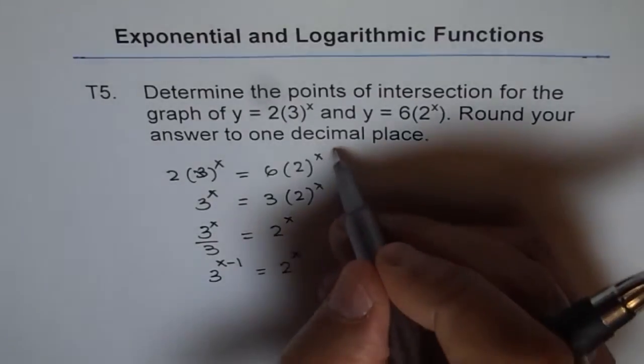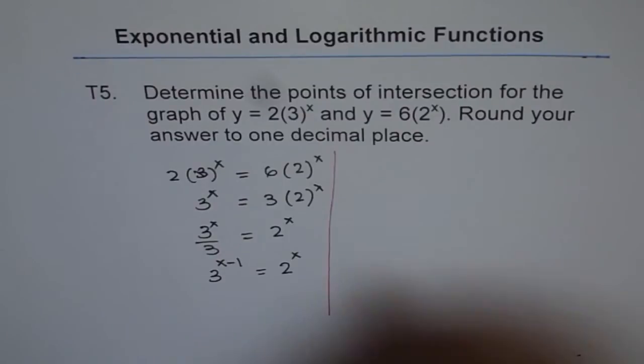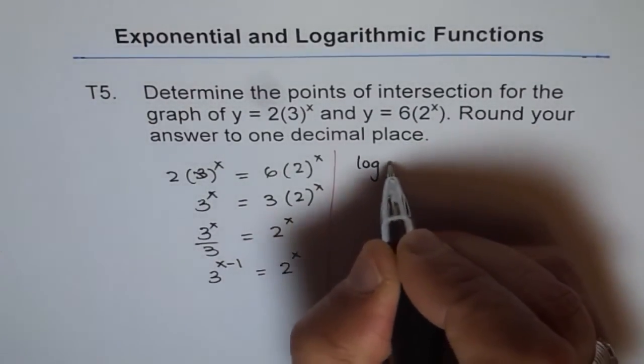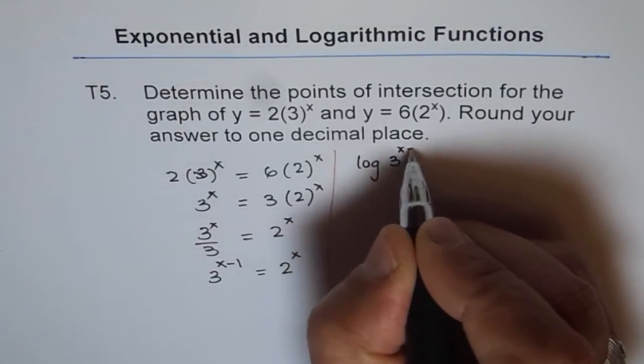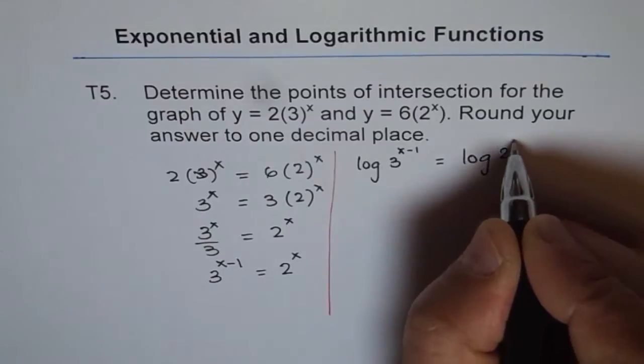So that is how we can write them as exponents. And now to solve for x, what we should do is take log on both sides. If we take log on both sides, we get log of 3 to the power of x minus 1 equals log of 2 to the power of x.